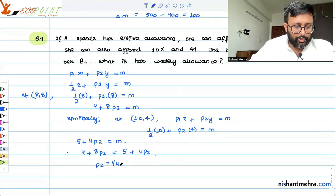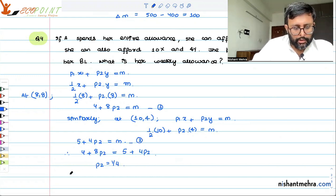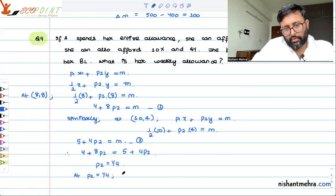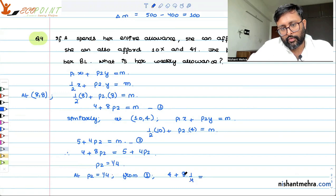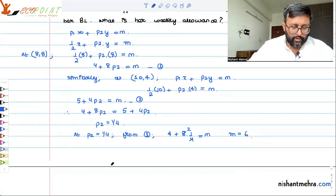Once you have P2 also with you, you can just substitute this P2 in either of these equations, equation 1 or equation 2. You can just put this in either of these equations. So at P2 equals to 1/4, from equation 1 we have 4 plus 8P2, P2 is 1/4, so your M is equal to 6.